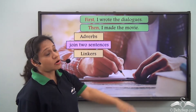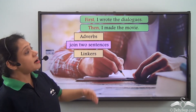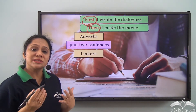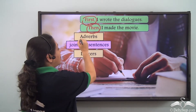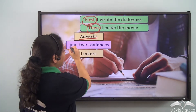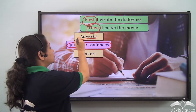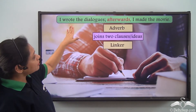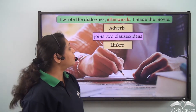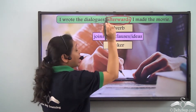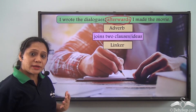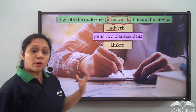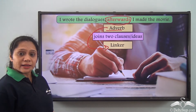'First I wrote the dialogues, then I made the movie.' Here 'first' and 'then' are adverbs helping us to join ideas in two separate sentences, so they are behaving like linkers. 'I wrote the dialogue; afterwards I made the movie.' Here 'afterwards' is an adverb helping us to join two ideas or clauses within the same sentence, so this adverb is working as a linker.